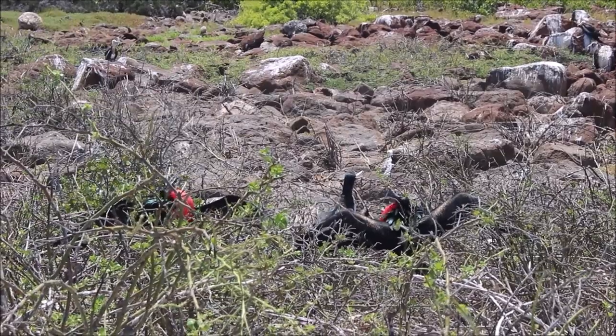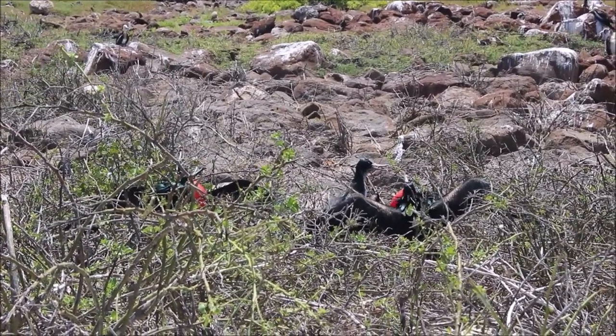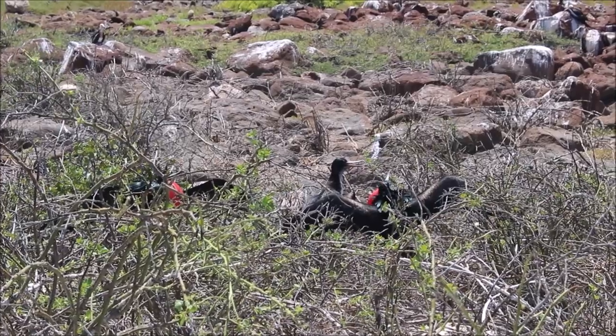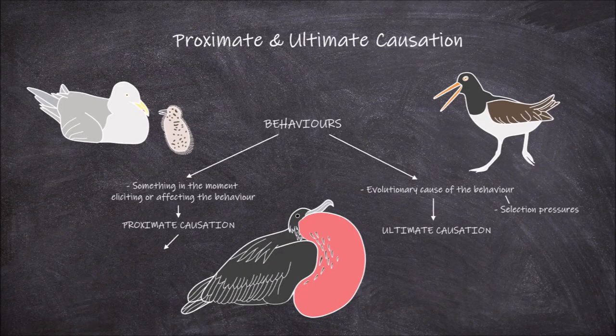A proximate cause is looking at what mechanism in that moment causes the organism to exhibit this behavior. A proximate cause of this behavior could be the flying overhead of female frigate birds, whereas an ultimate cause is looking in terms of evolution and how the behavior came to exist at all.